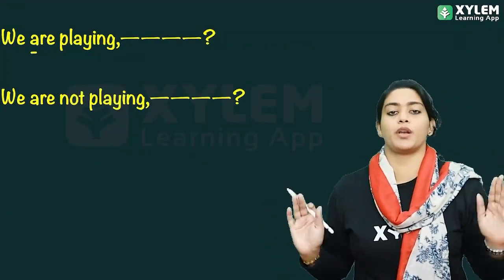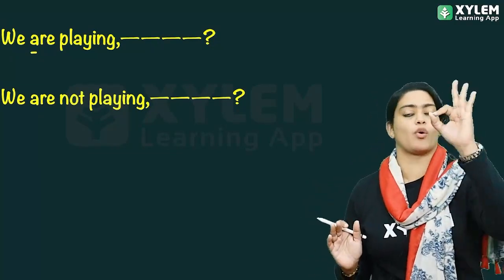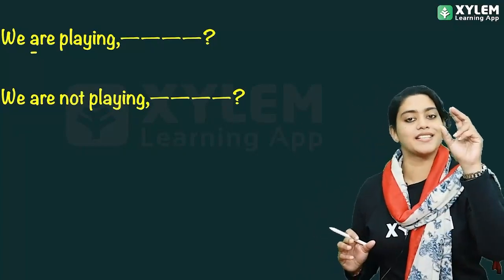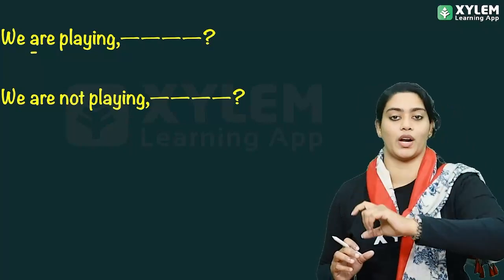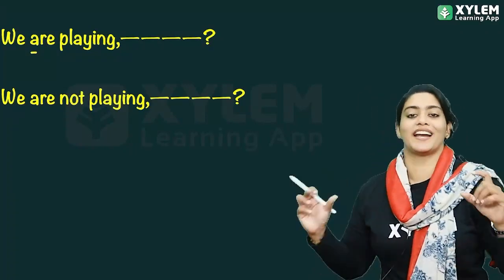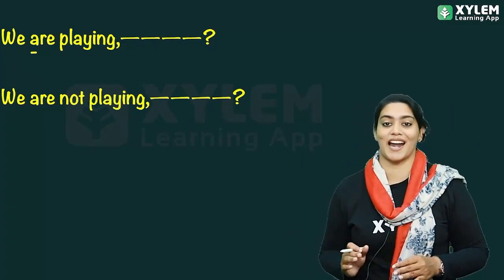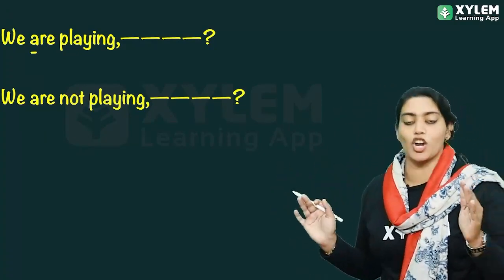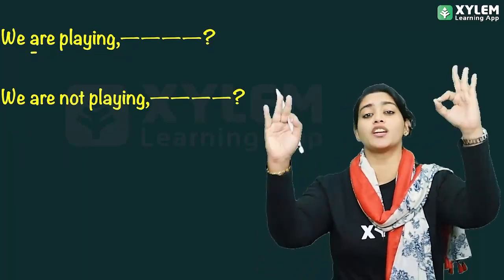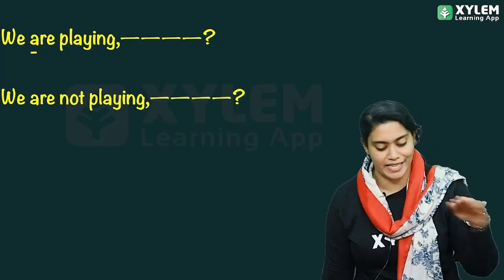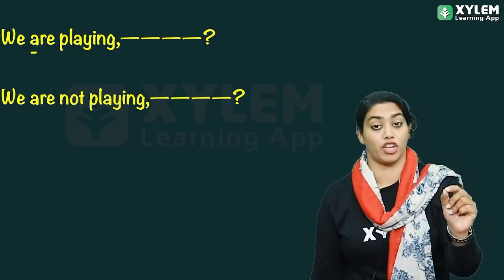First, I have two sentences: 'We are playing' and 'We are not playing.' If you ask questions, you will answer using these two sentences. What is the difference between these two sentences? It is easy to say — one is a positive sentence and the other, 'We are not playing,' is a negative sentence. So, a positive sentence versus a negative sentence.